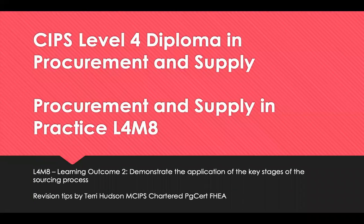Hello and welcome to revision tips for CIPS Level 4 Diploma in Procurement and Supply. This is module 8, Procurement and Supply in Practice, and it's Learning Outcome 2, which is to demonstrate the application of the key stages in the sourcing process such as the creation of contract terms, supplier selection, contract award and supplier and contract management.